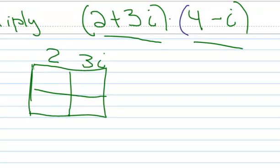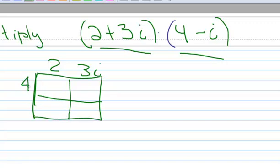We take the second binomial, we write the a part right there or the real part, we write the b part or the imaginary part right there.